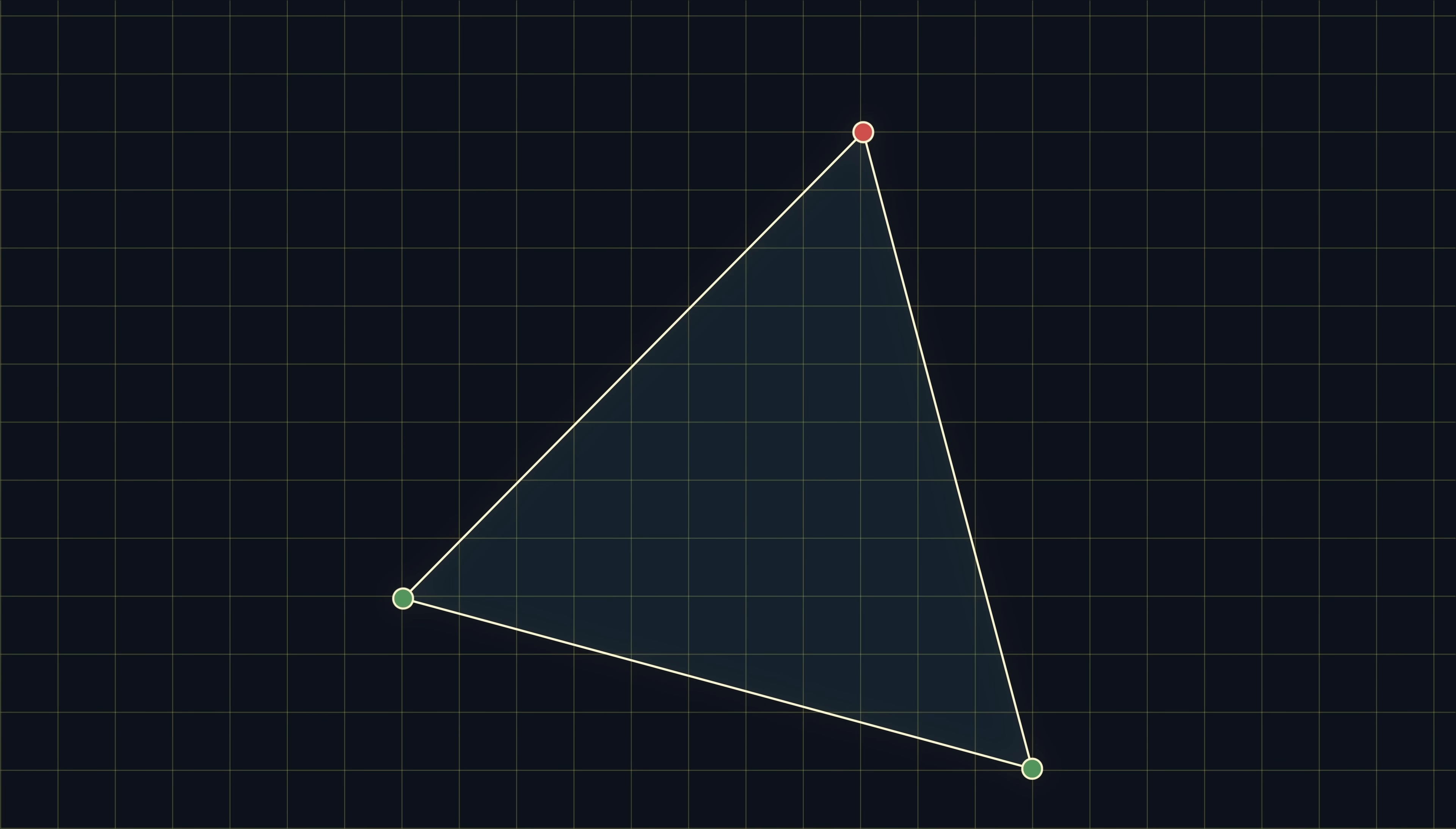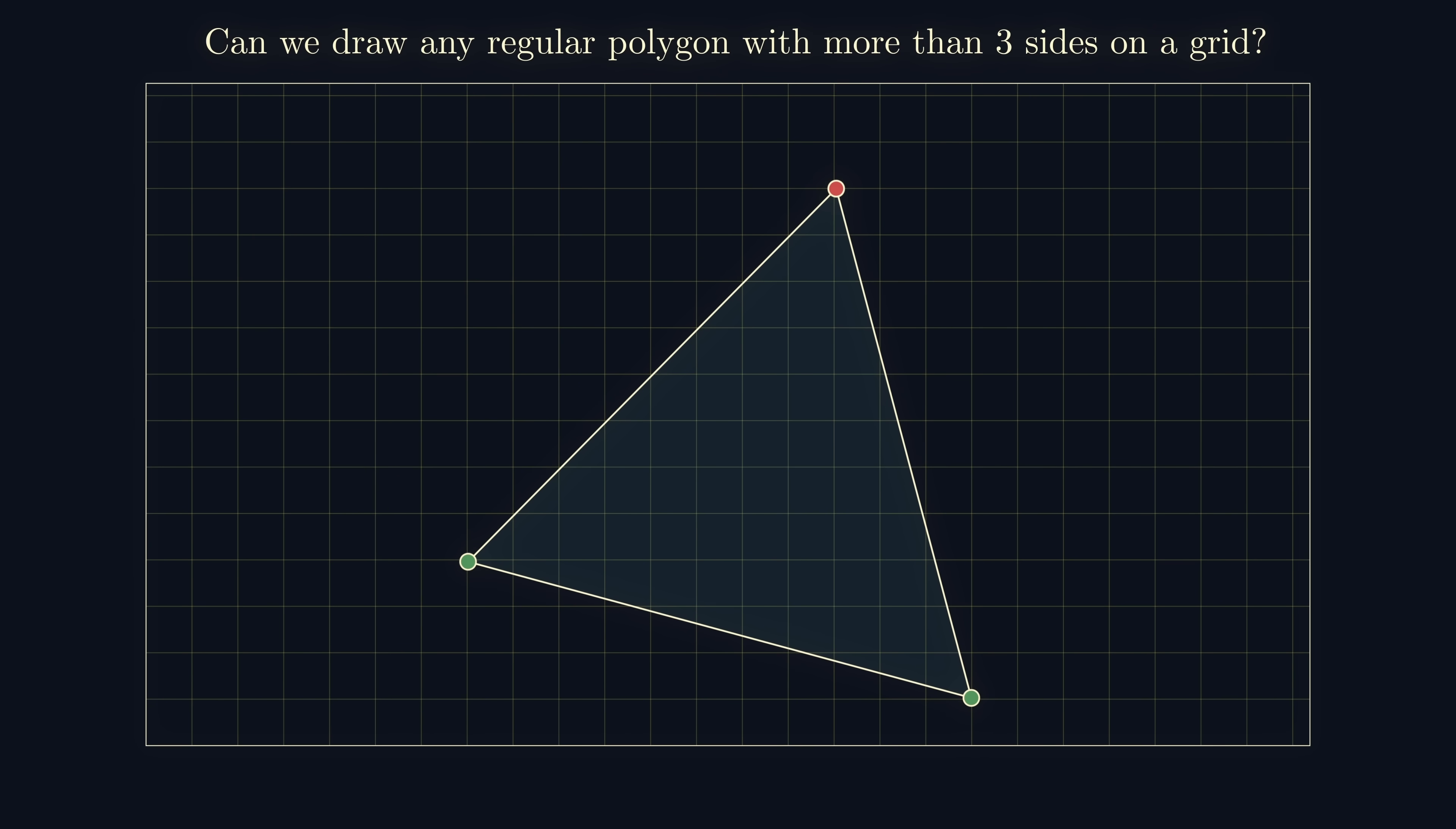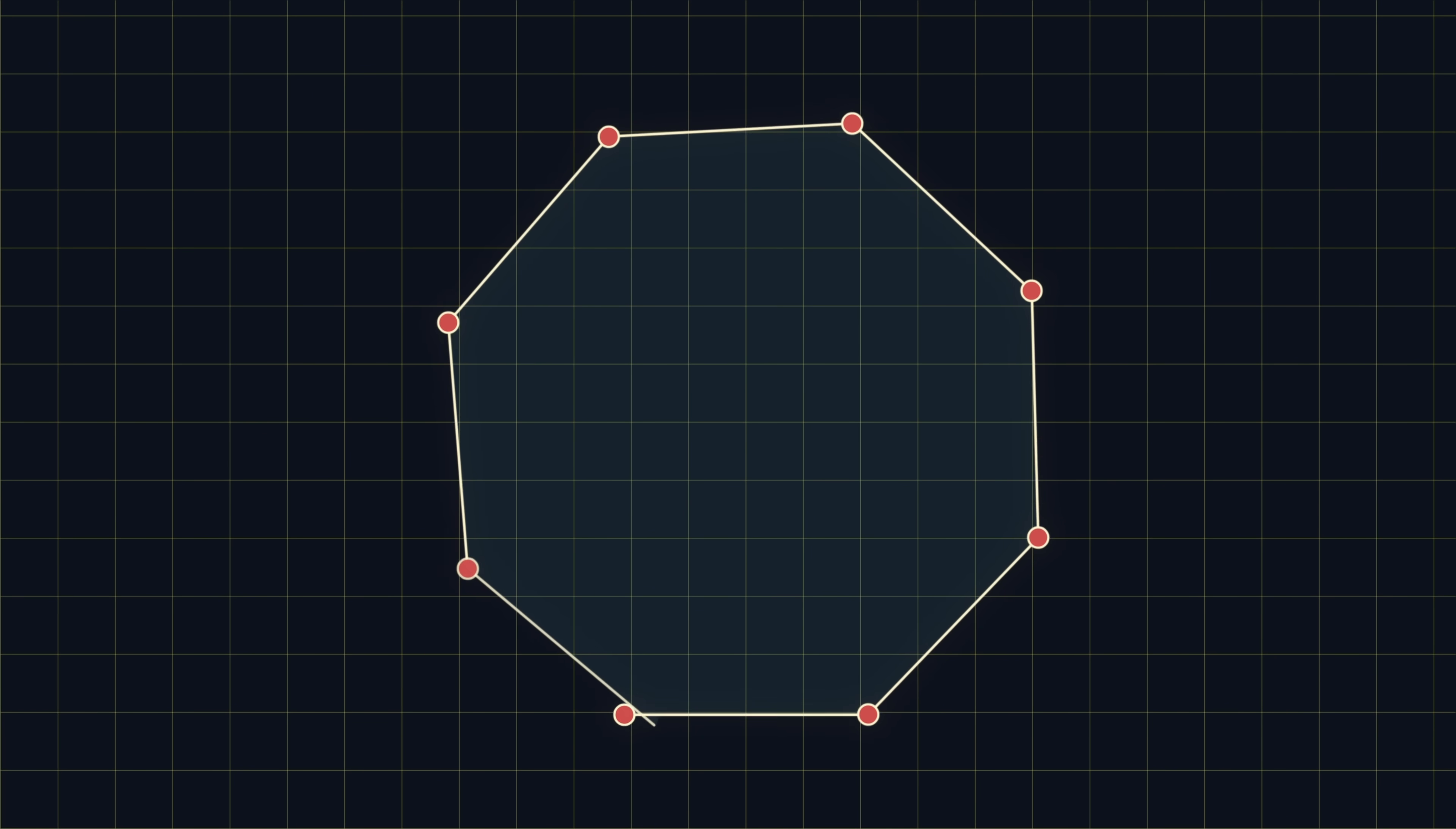Whilst that's slightly unfortunate, maybe our luck will improve for shapes with more sides? Well, firstly, just to state the obvious, it's no surprise that we can draw a square on a square grid. But what we're really asking is about regular shapes with five or more sides. Well, as before, let's suppose we have some regular n-gon, which can be drawn with all its vertices at integer lattice points.